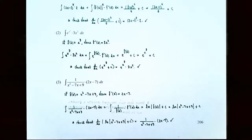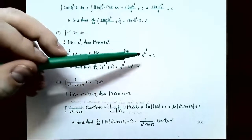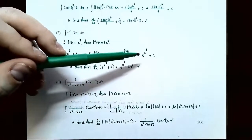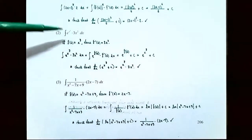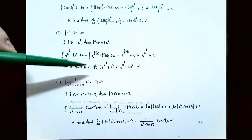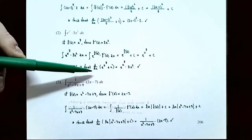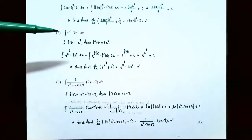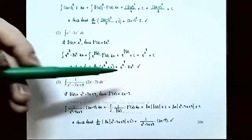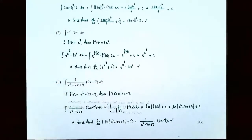Keep in mind you can always check your answer by taking the derivative of the family of antiderivatives, and you should get the original integrand. So if you check the derivative with respect to x of e to the x cubed plus c, you should get e to the x cubed times 3x squared.